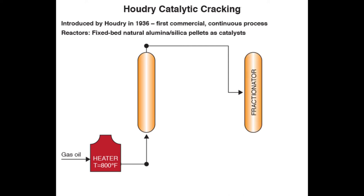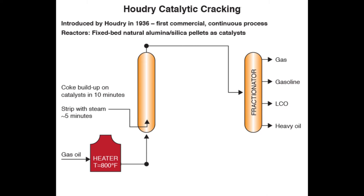The products are fed to a fractionator, where they are separated into gas, gasoline, and LCO — light cycle oil — as the major products from cat cracking. As cracking goes on, the catalysts are deactivated by coke buildup, and this happens pretty fast, within 10 minutes of the introduction of the feed into the reactor.